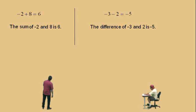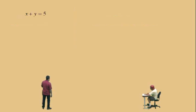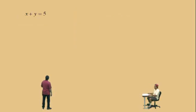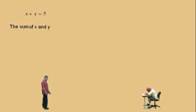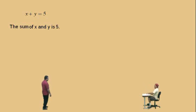Here we go, Charlie. Don't get scared — this has variables in it, but first of all, is it a sum or a difference? Sum. It is a sum. It's a sum of what? X and y. X and y — very nice, Charlie. Now bring us home. Is 5.